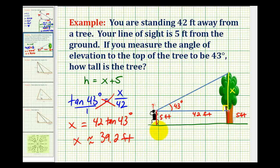But we're not quite done. Remember the height of the tree was equal to x plus five. So the height of the tree is equal to 39.2 plus five, which is equal to 44.2 feet.